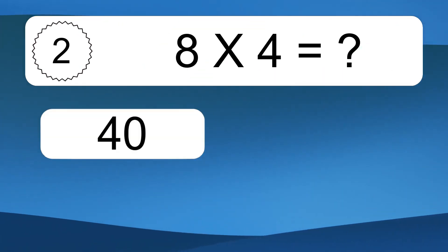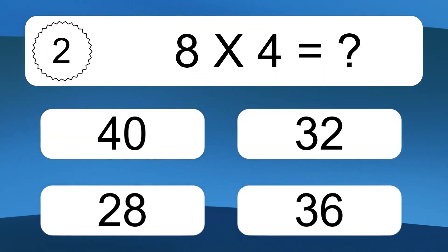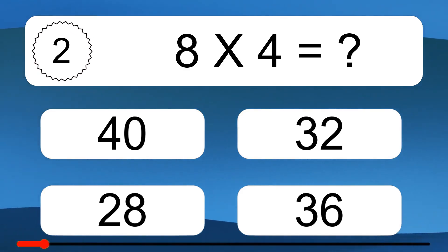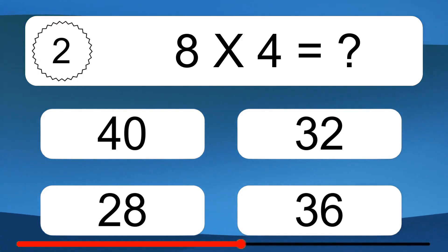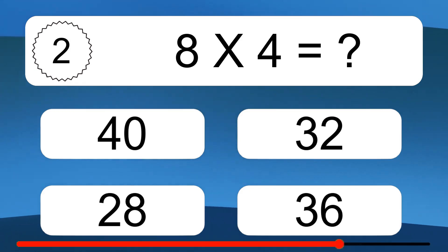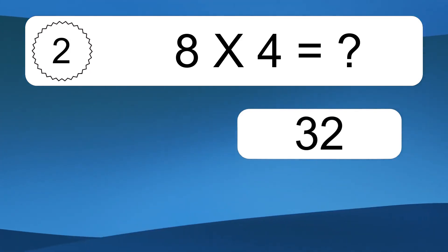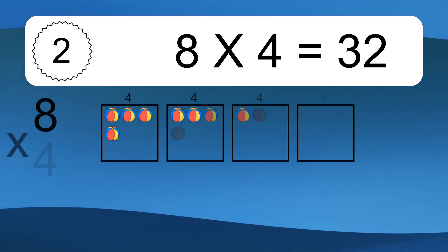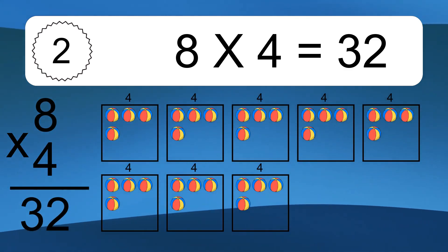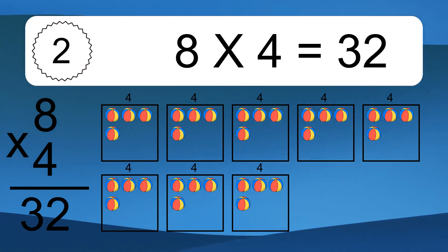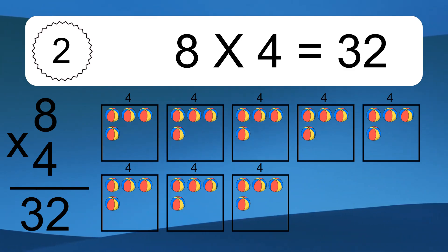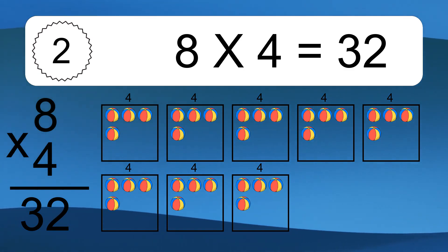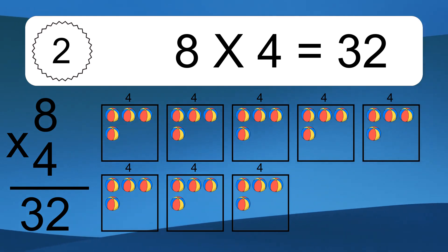8 times 4 equals what? 8 times 4 equals 32. We have 8 boxes, and each box has 4 colorful balls inside. If you count all the balls in all the boxes together, you will have 8 times 4 balls.